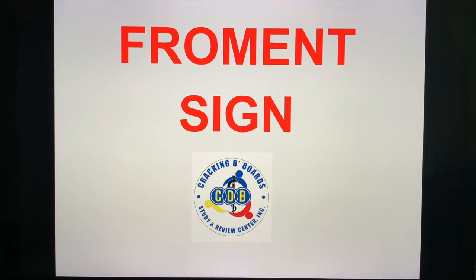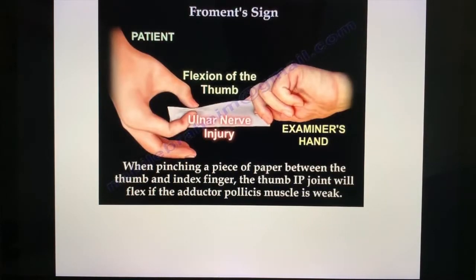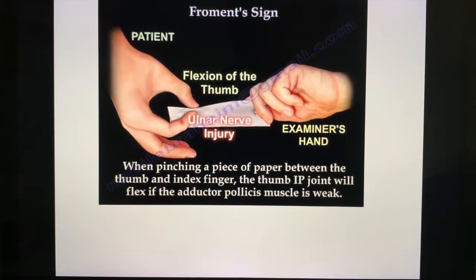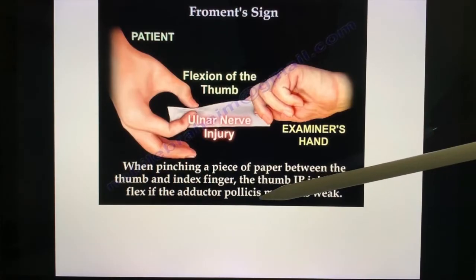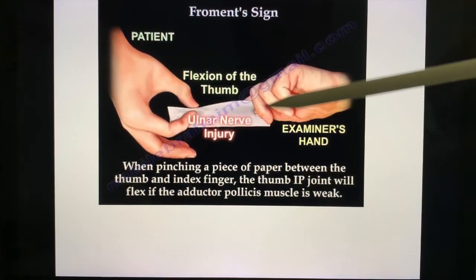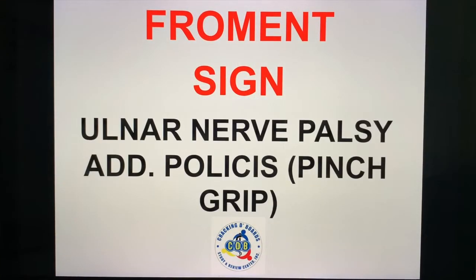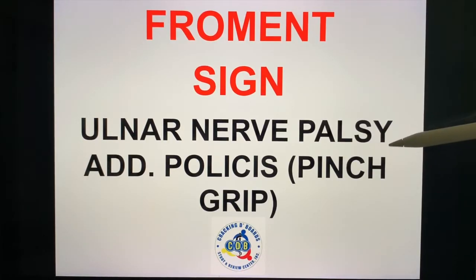The Froment sign is something I can see coming in the exam. When pinching a piece of paper between the thumb and the index finger, the thumb IP joint will flex if the adductor pollicis muscle is weak. The Froment sign tests weakness of the adductor pollicis muscle. If this sign is positive, it is indicative of ulnar nerve injury. Froment sign is diagnostic of ulnar nerve palsy — the weak muscle in the pinch grip is the adductor pollicis.